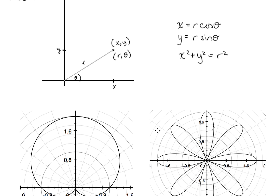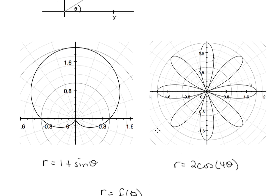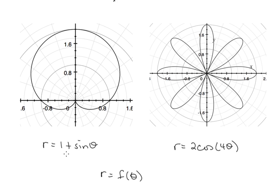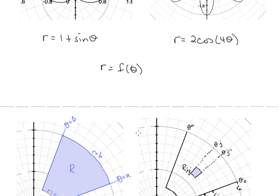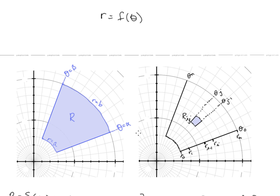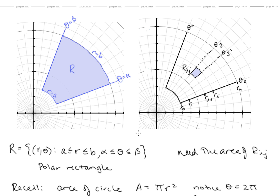When we talk about functions in polar coordinates, we're talking about r as a function of theta. We've seen functions like r equals 1 plus sine theta and r equals 2 cosine 4 theta, for example. Now imagine we're integrating to find a volume over a domain like one of these. We would want to use polar coordinates to describe the domain, so we'd want the entire double integral in polar coordinates.